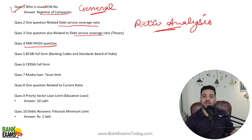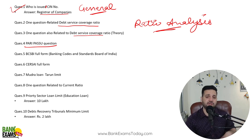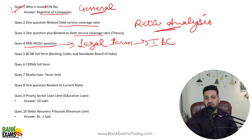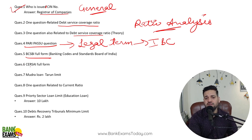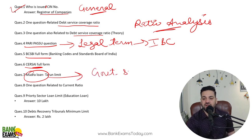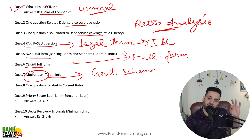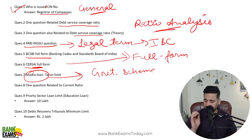Paripasso appeared in the exam. What do you mean by the term paripasso? That means all the lenders have the same rights — paripasso means equality. This is a legal term used in IBC and Sarfaisi Act. BCSBI — Banking Codes and Standards Board of India — its full form appeared. CERSAI's full form, Mudra loan Tarun category limit — government schemes are really, really important. Please note that down. Full forms appear in quite a few exams. Whenever you are reading any RBI circular or government scheme, please check the full forms as well.